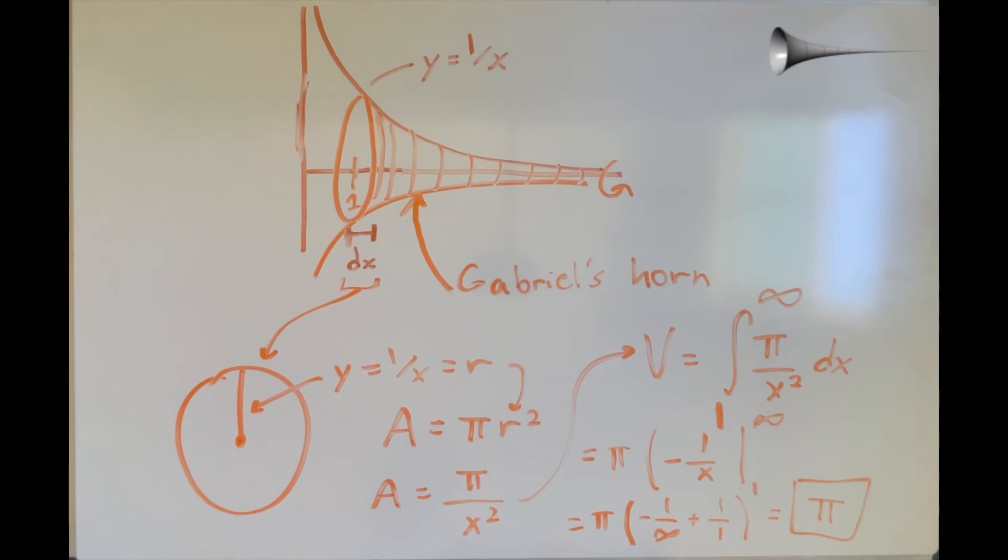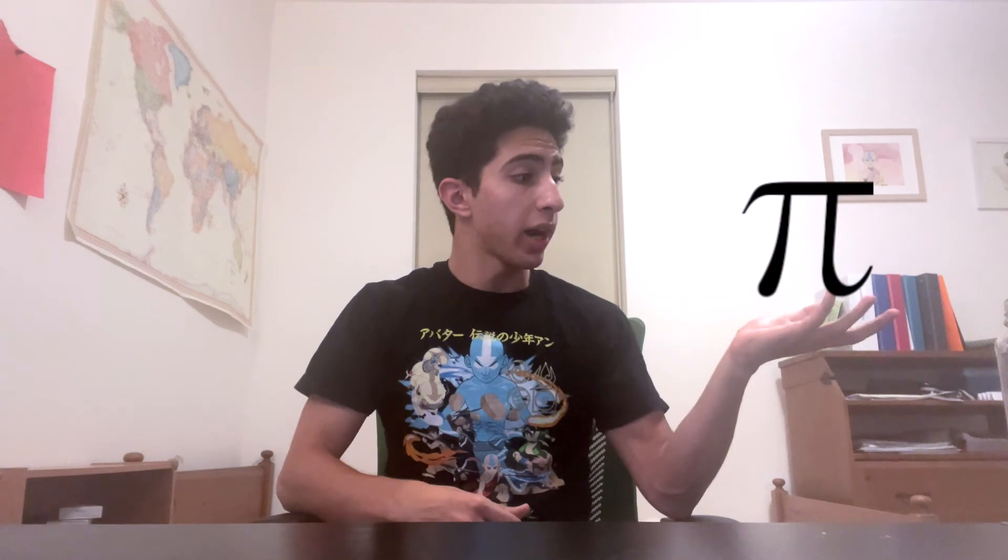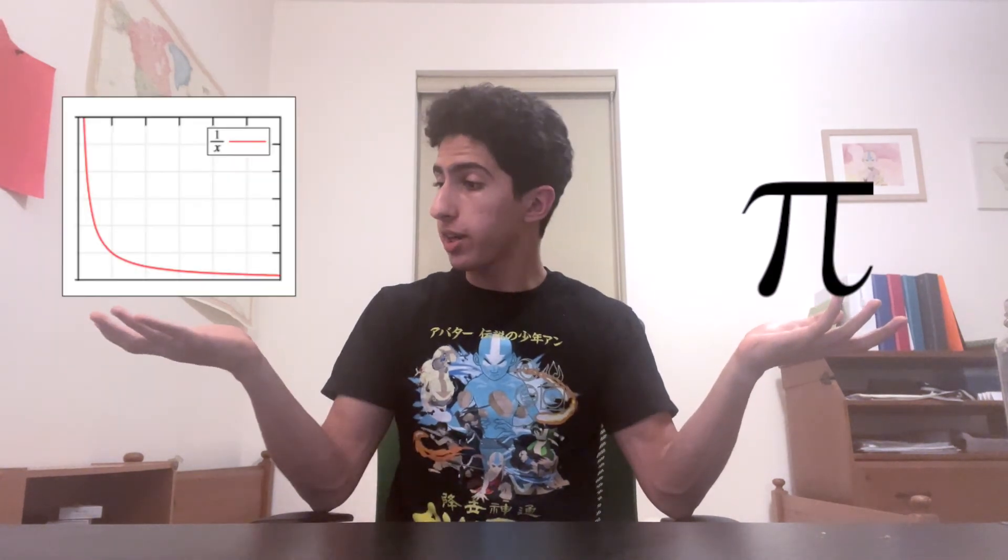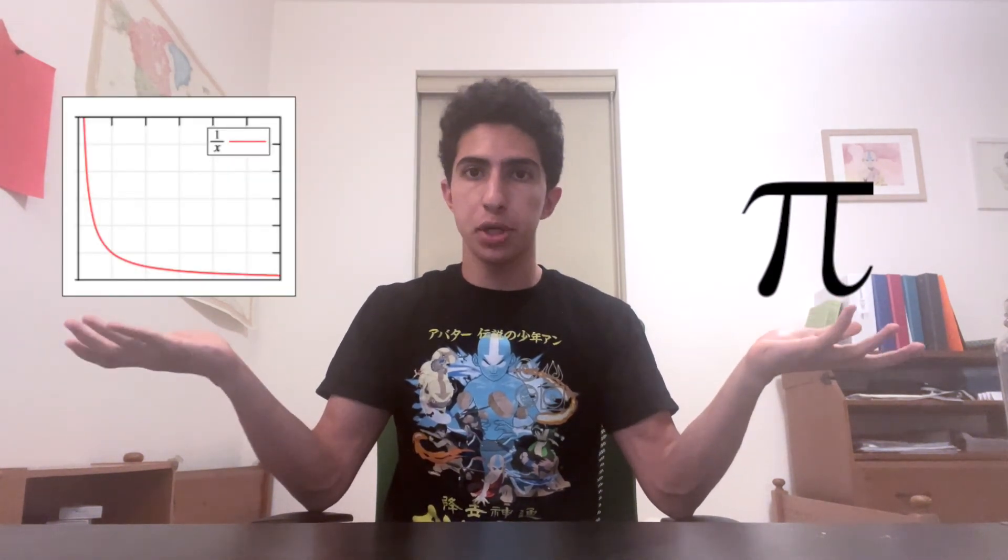Which means that the volume of Gabriel's horn, an infinitely long shape, is pi. Cool, right? We got pi from the function 1 over x, two seemingly unrelated mathematical expressions.